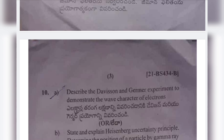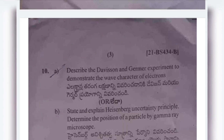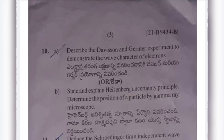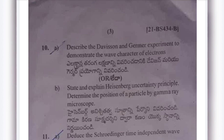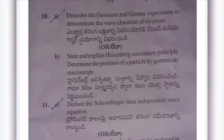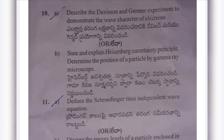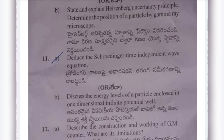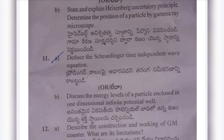Tenth (b): State and explain the Heisenberg Uncertainty Principle; determine the position of a particle by gamma-ray microscope. Eleventh (a): Deduce the Schrödinger time-independent wave equation. Eleventh (b): Discuss the energy levels of a particle enclosed in a one-dimensional infinite potential well.